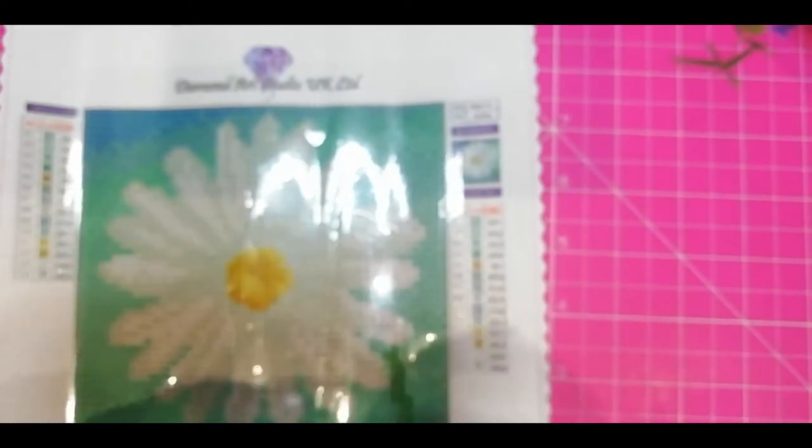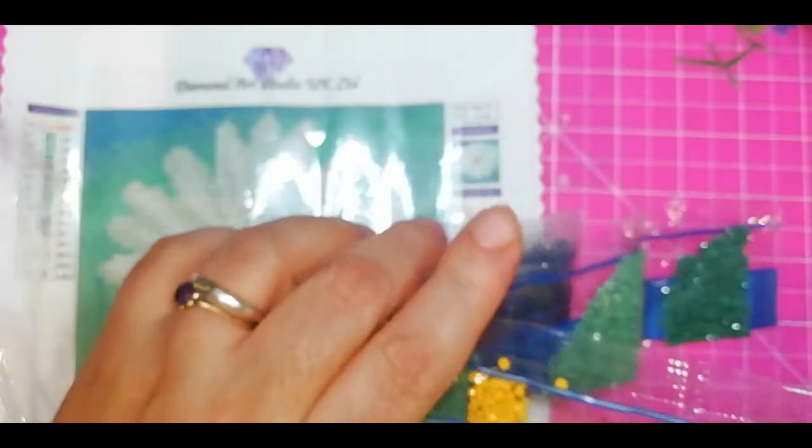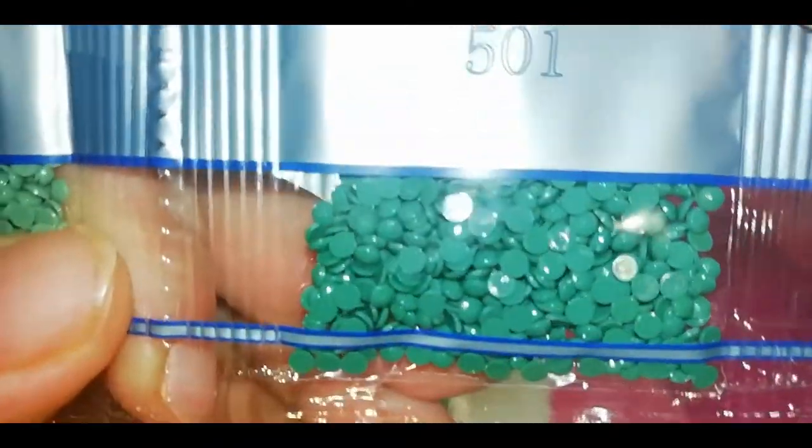Now let's see our drills. We have the silver strip packaging with all the DMC codes on. Let's see our drills, shall we?